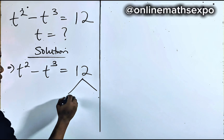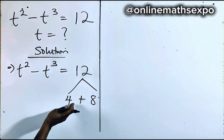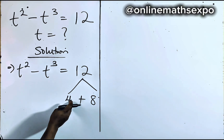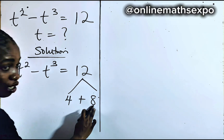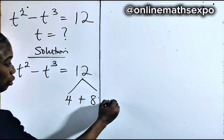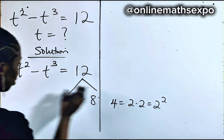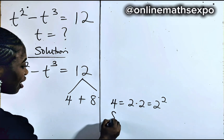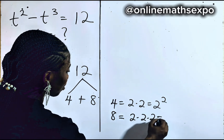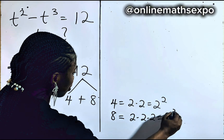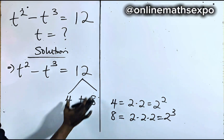Why did we choose 4 and 8? Because 4 is a perfect square and 8 is a perfect cube. 4 is the same as 2 times 2, which is 2 squared. And 8 is 2 multiplied 3 times, which gives you 2 cubed. So 12 equals 2 squared plus 2 cubed.